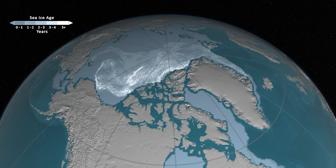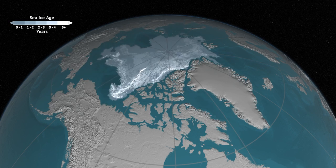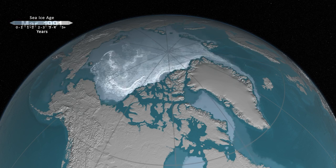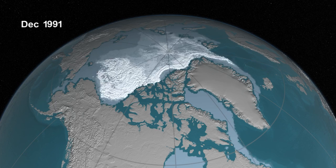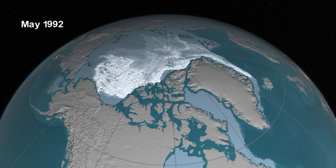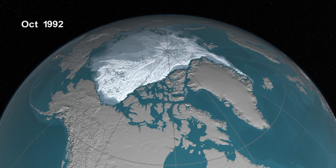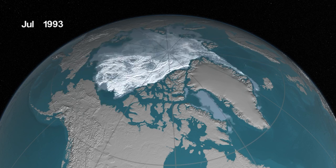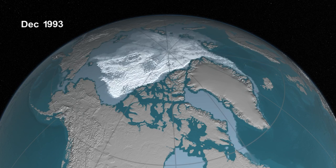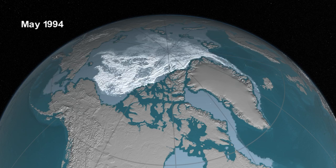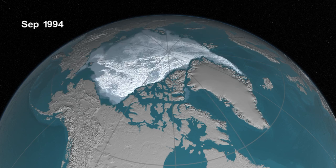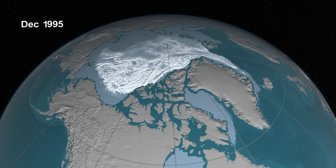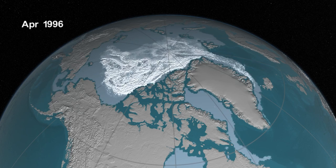Eventually, the ice will spin out of that gyre and go out through Fram Strait. But in the past, what has happened is we've always had enough ice growth and ice aging — enough ice surviving the summers — to replenish the older ice that's lost.